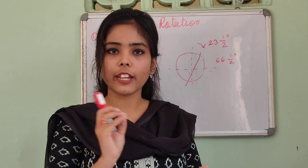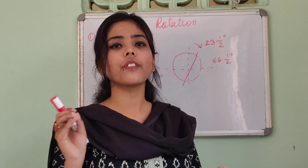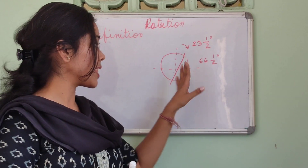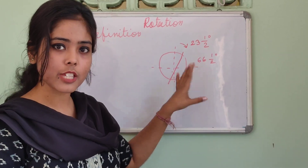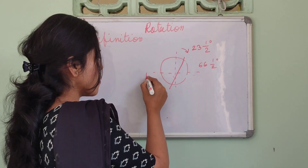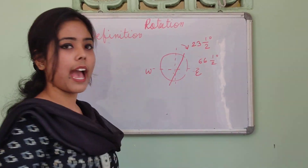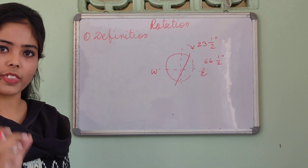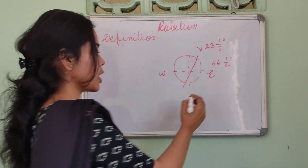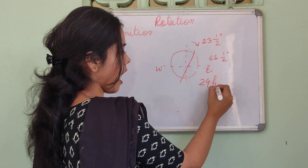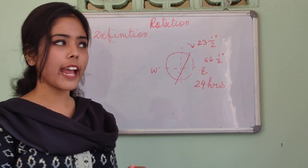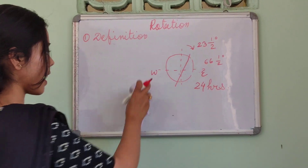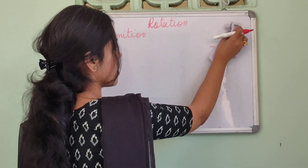So we have understood the definition of rotation: it is the spinning of Earth's surface on the basis of its own axis, from west to east direction, approximately 24 hours. There are some precise times but you can say it is 24 hours. From this definition, you can easily identify the features of Earth's rotation.